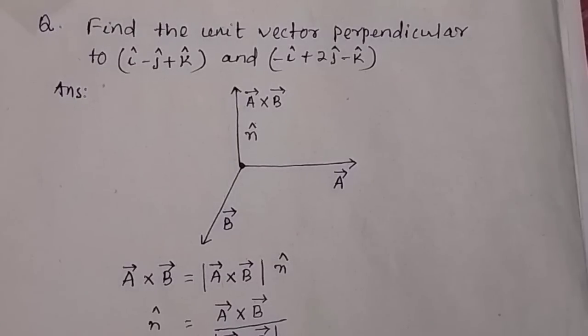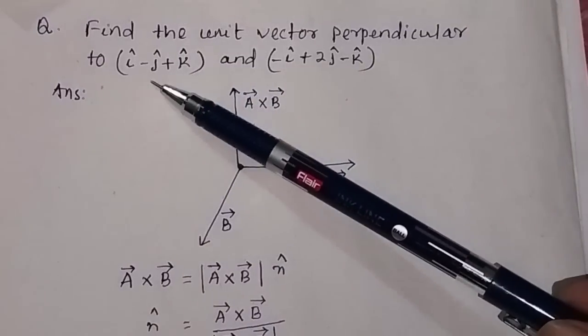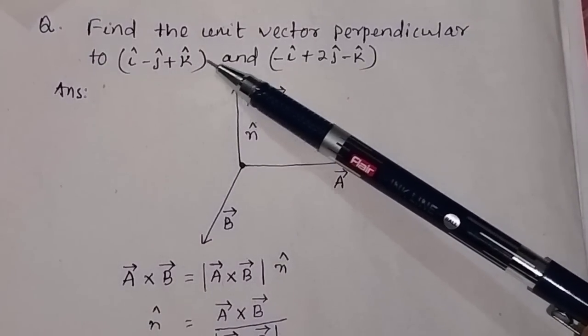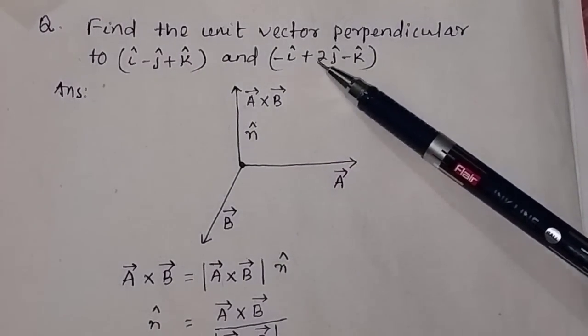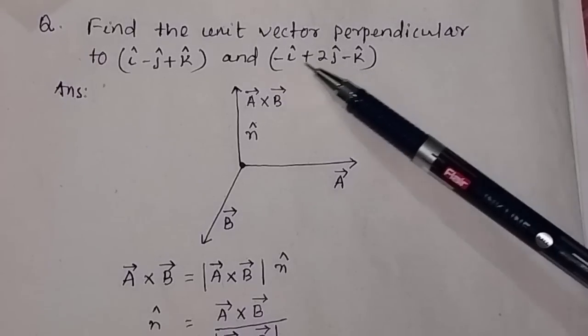Find the unit vector which is perpendicular to the vector i-cap minus j-cap plus k-cap and minus i-cap plus 2j-cap minus k-cap.